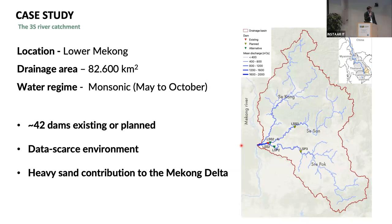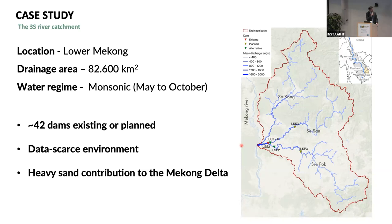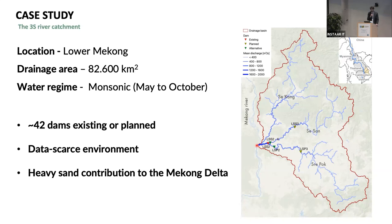To finish up, I want to show a new case study, very different from the Baker River — the 3S River system, a tributary of the Mekong, which we're working to publish now. This case study is very data scarce: we have no information about sediment delivery, and only limited, highly uncertain data on sediment yield in the catchment. We're applying D-CASCADE for strategic reservoir planning and management, including the use of drawdown sediment flushing to reduce the impact of sediment trapping caused by reservoirs.